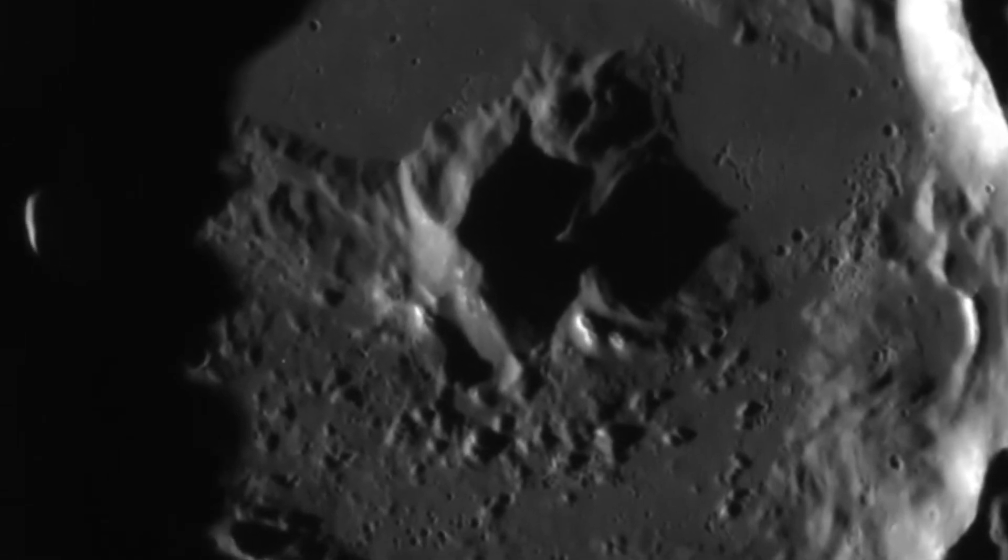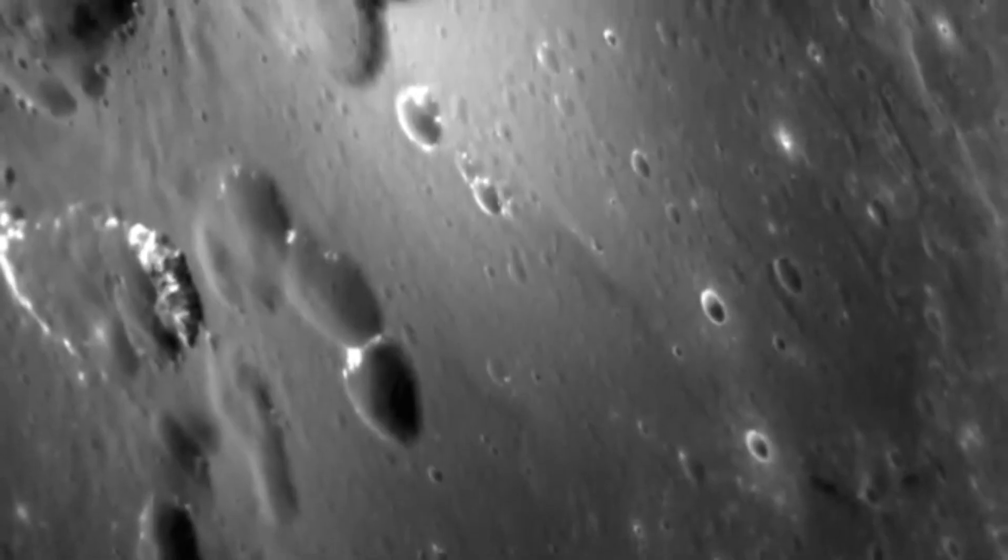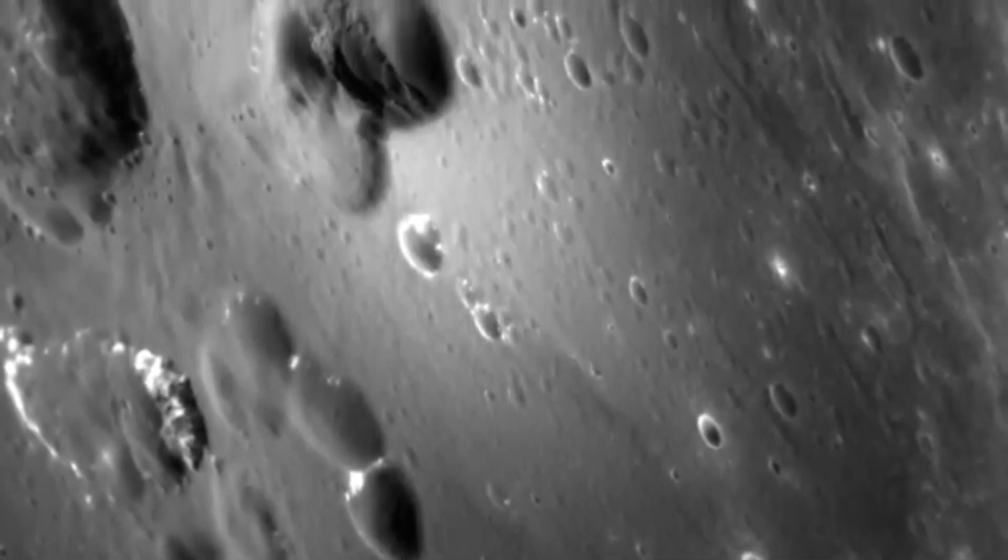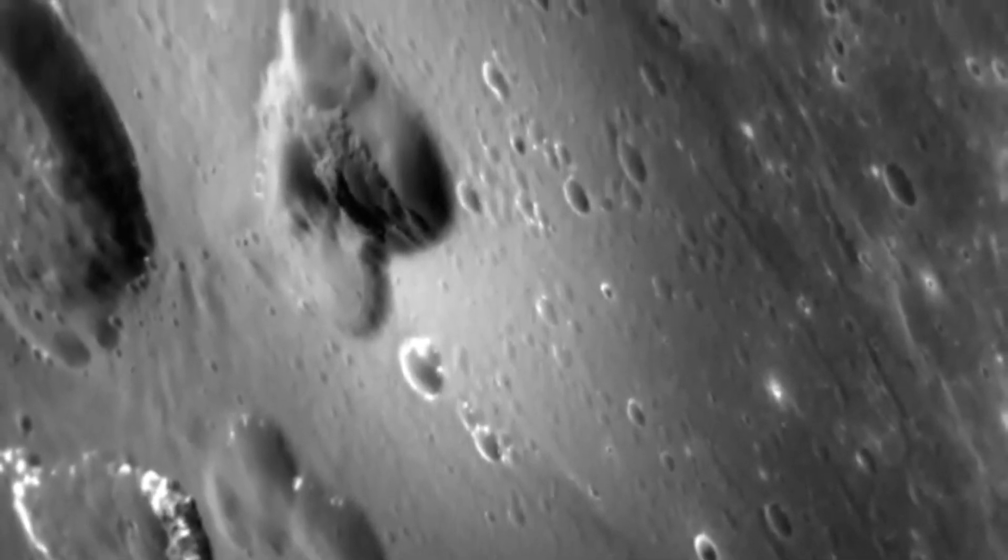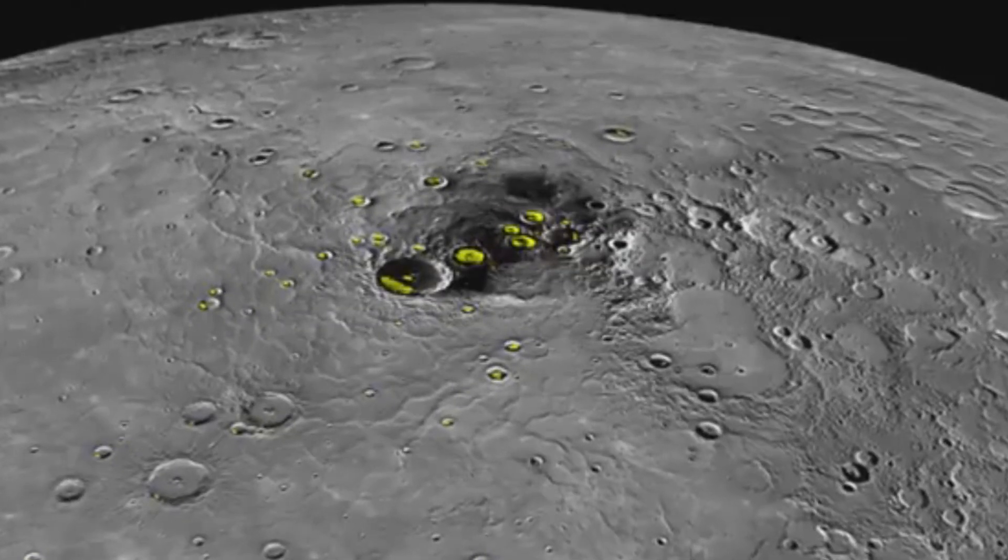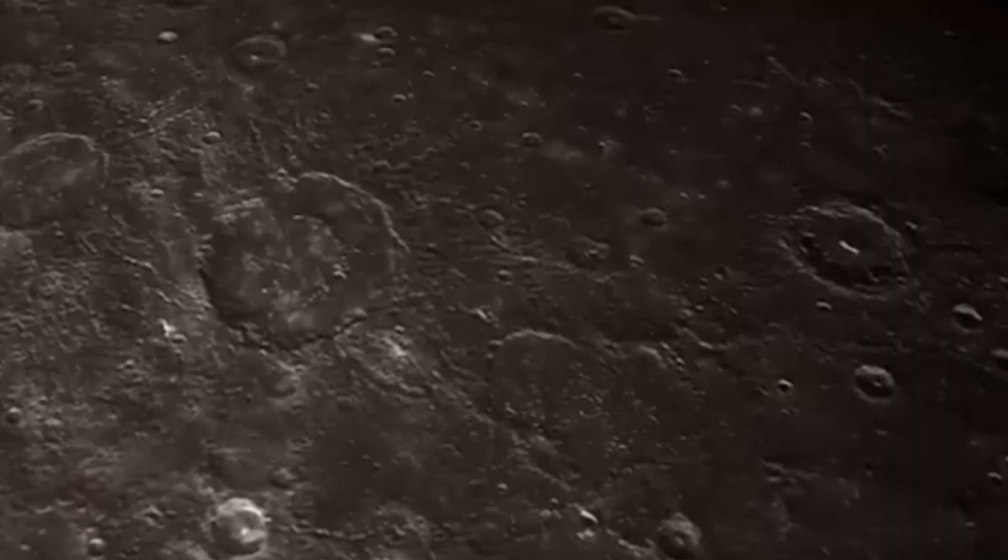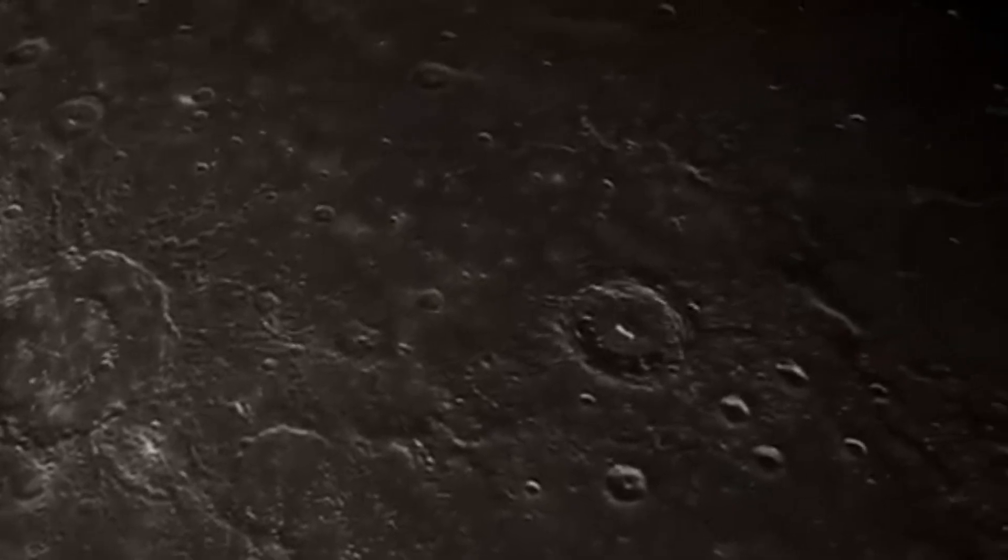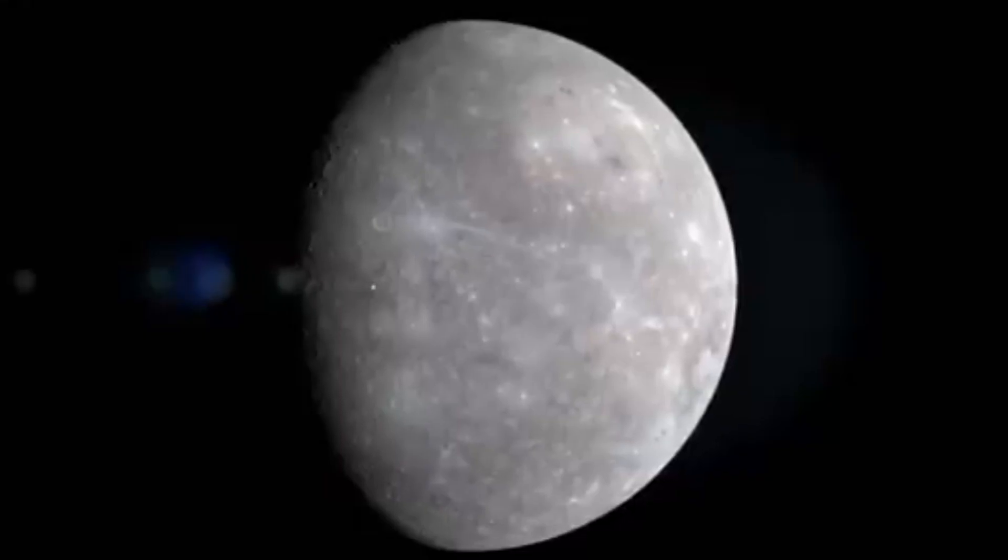As we explore Mercury, we question how its core remains partially liquid despite extreme cold and how its orbit affects surface rock composition. These mysteries encourage us to rethink theories on planetary formation and evolution. Although Mercury is the smallest planet in the solar system, it conceals numerous peculiarities.